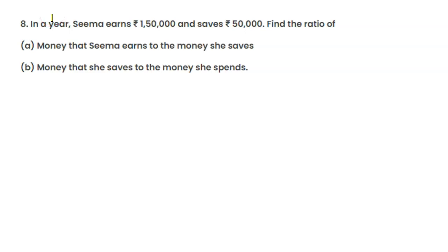Hello everyone, welcome back to my channel. Today's question is: In a year, Seema earns 1,50,000 and saves 50,000. Find the ratio.